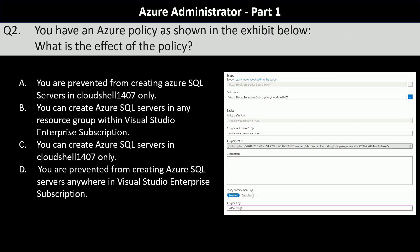Next question. You have an Azure Policy as shown in the following exhibit. What is the effect of the policy? Your options are: you are prevented from creating Azure SQL Servers in Cloud Shell 1407 only; you can create Azure SQL Servers in any resource group within the Visual Studio Enterprise subscription; you can create Azure SQL Servers in Cloud Shell 1407 only; or you are prevented from creating Azure SQL Servers anywhere in the Visual Studio Enterprise subscription.